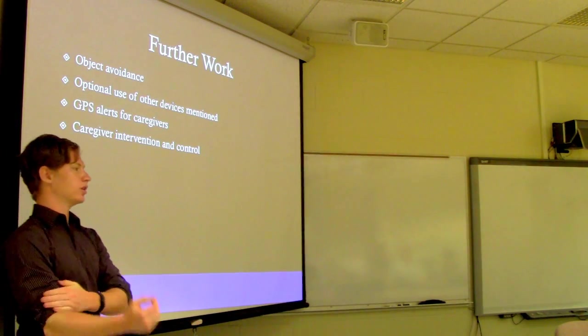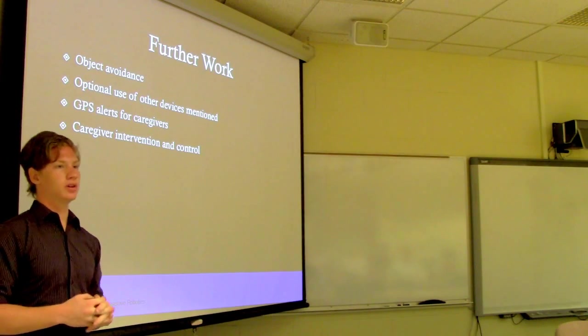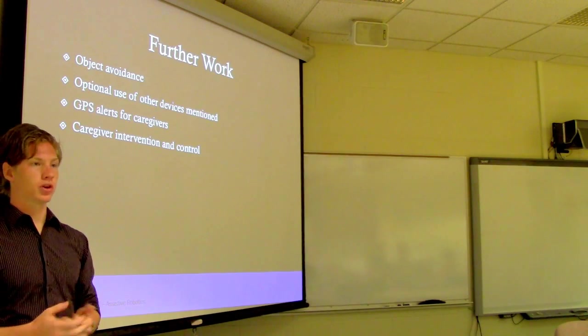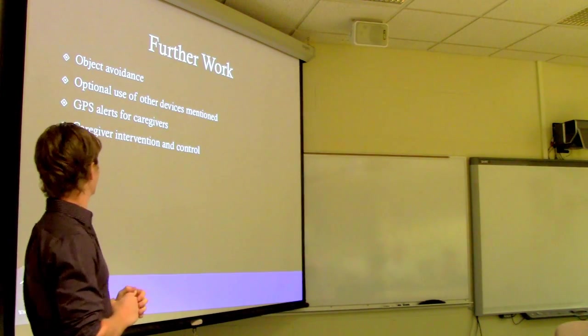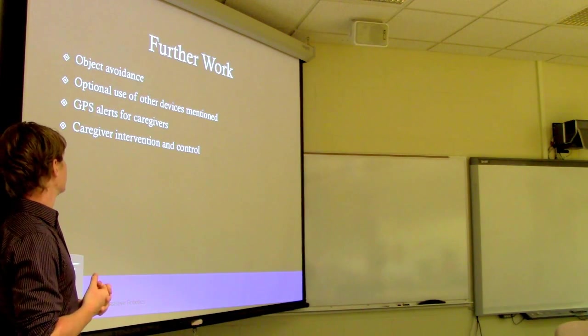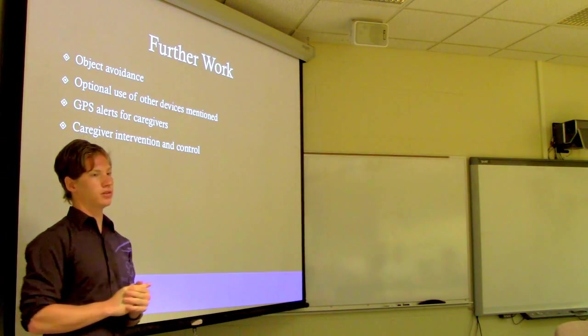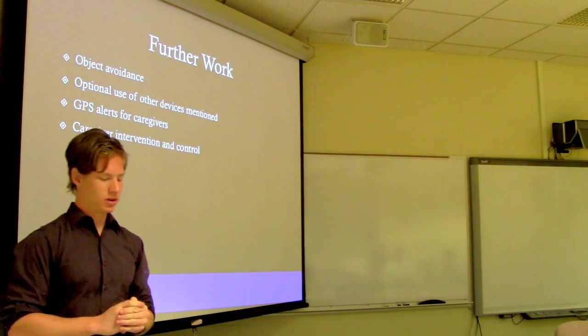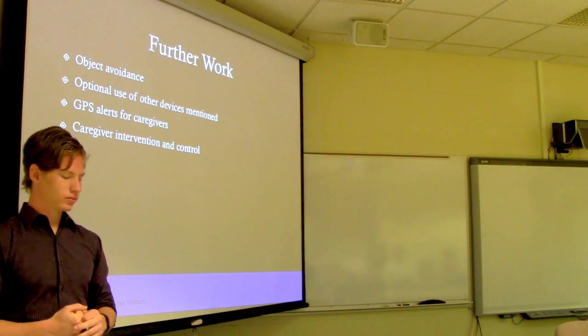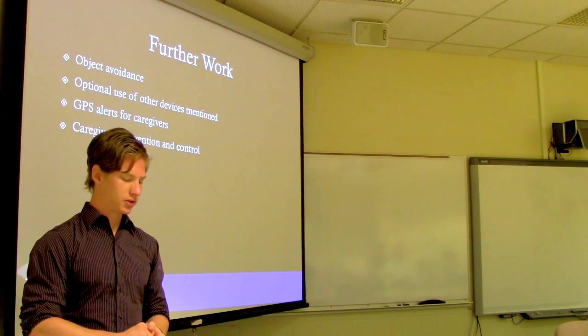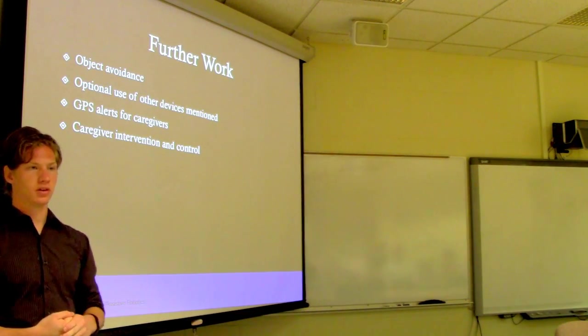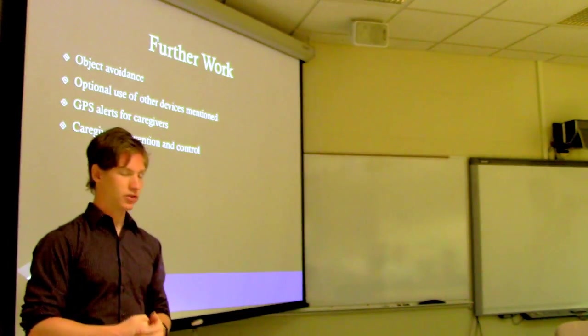And for some further work you could add some object avoidance, so that would be something more than just some people walking by, but maybe if a ball bounced in the way or if some curve detection, anything relevant to that, as well as you could integrate this with the other system that I've shown, and GPS alerts and caregiver intervention and control. Those would need some more technologies added, which would increase the complexity. And overall this would just need to be easier for consumers to access, so this would need to go probably through a wheelchair company rather than just an add-on so that they can actually integrate it into their systems.